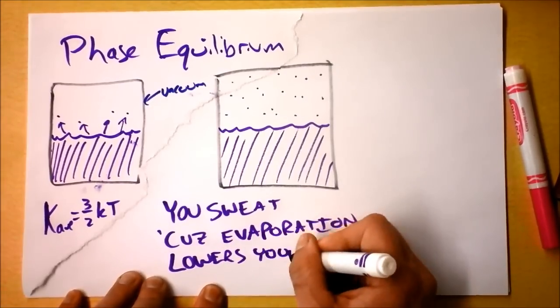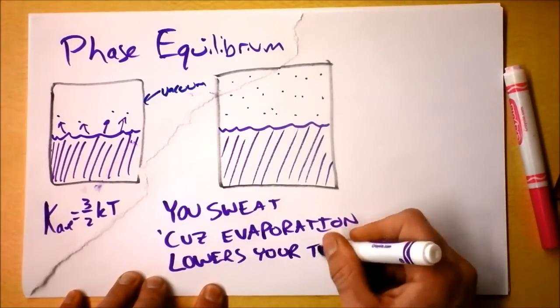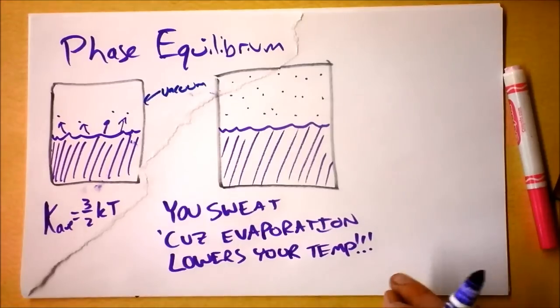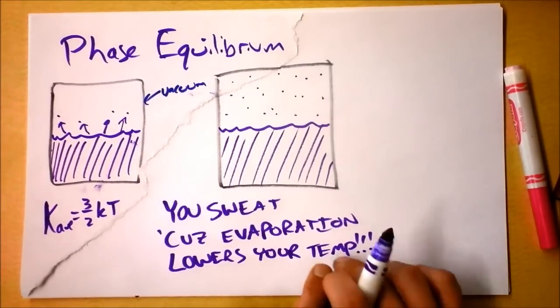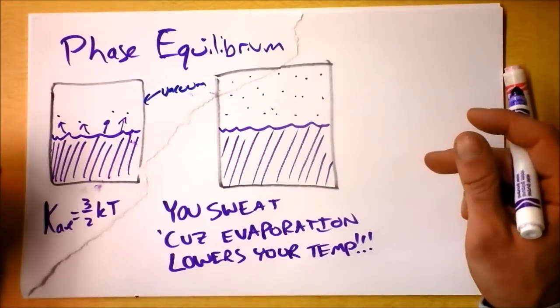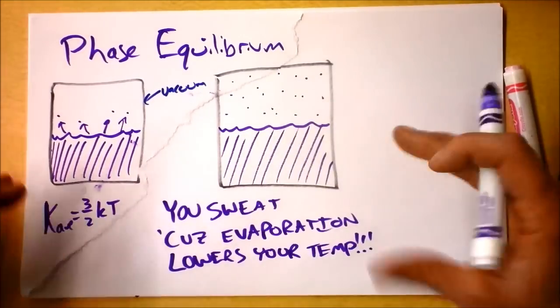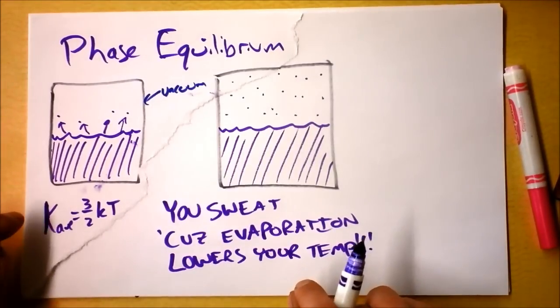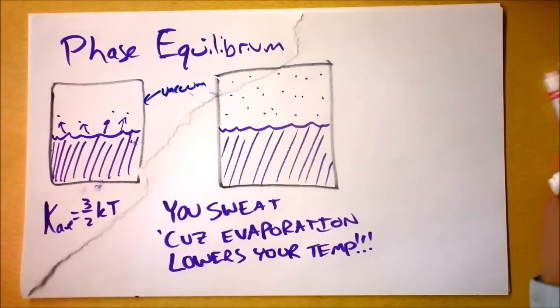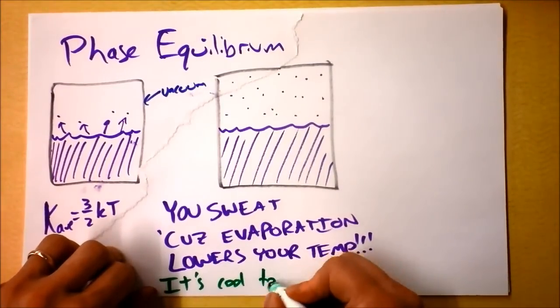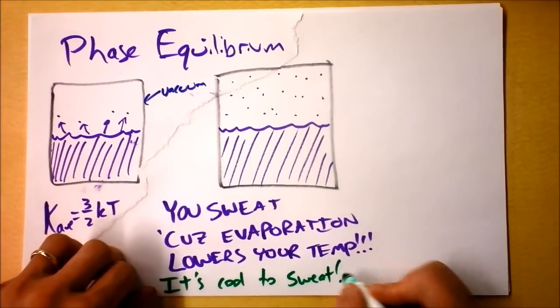You could say, if you wanted to be fancy, you could say evaporation is endothermic. It is smart to sweat because sweating causes the highest energy particles on you to leave. And that means that the average kinetic energy of the fluid that's wrapped on your body because you've nasty been sweating all day, gross, is less. With less kinetic energy, you have a lower temperature, and that's why it's cool to sweat. Oh, we could put that, that'll be our slogan. It's cool to sweat. Maybe now you'll remember.